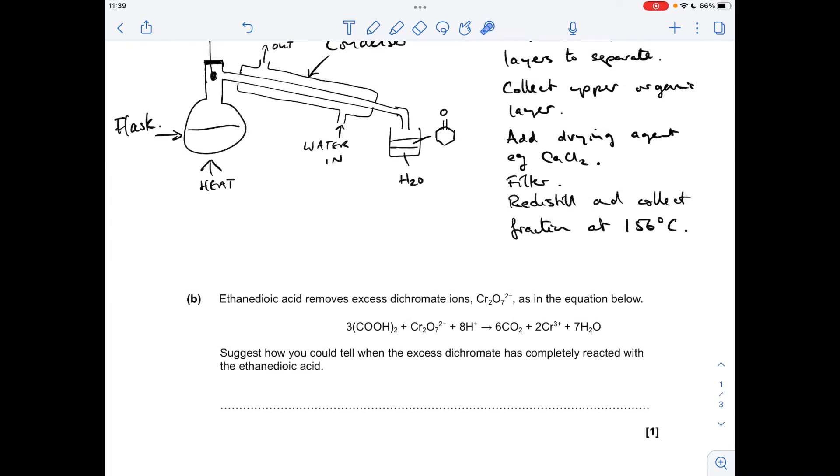Part B suggests how you could tell when the excess dichromate has completely reacted with the ethane diolic acid. Well you can see that one of the products is a gas carbon dioxide so you would see that the fizzing has stopped.